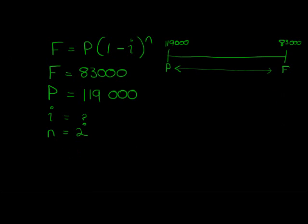So substituting in there, I get my future value is 83,000. My present value is 119,000. Or actually my past value. 1 minus I is the one I'm trying to work out. And N is the number of years it was depreciated over that 2 years.